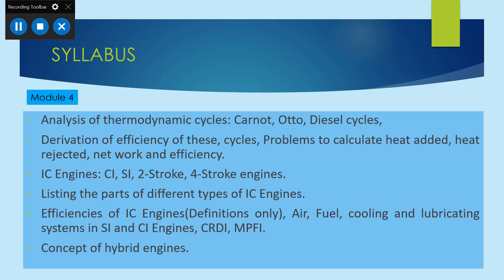We will study the parts of an IC engine — the different parts of IC engines. The next topic involves calculating the efficiencies of IC engines. We will also study small details about the air, fuel, cooling, and lubricating systems on SI engines and CI engines — spark ignition engines and compression ignition engines. We will also study basic ideas of CRDI, that means common rail direct injection engines, and MPFI, multi-point fuel injection engines.